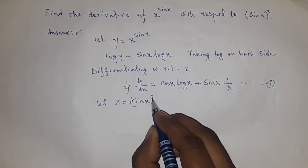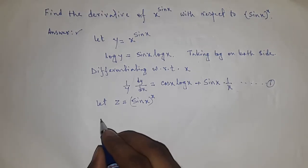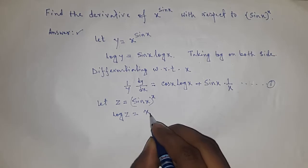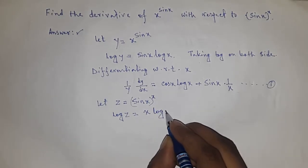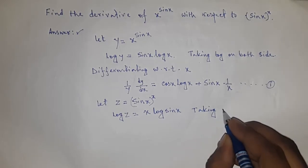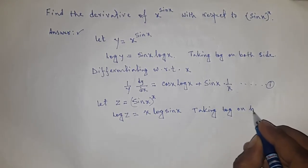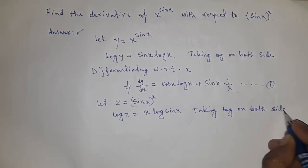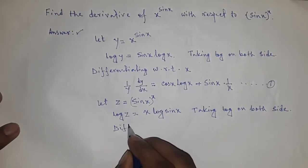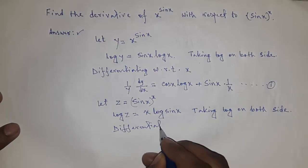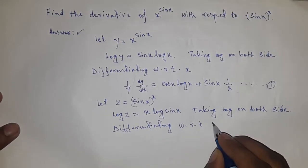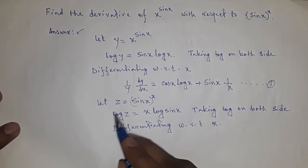Again, let z equal sin x to the power x. Taking log on both sides similarly, we get log z equals x times log sin x. Now differentiating this with respect to x.